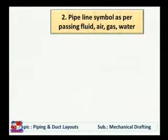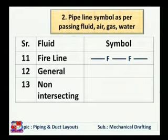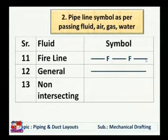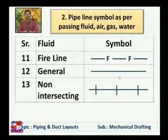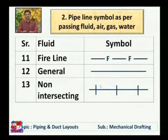To show other fluids like fire line, capital F is written intermittently — dash F dash F dash. In some cases, arrows are shown to indicate the direction of flow. A general symbol for fluid flow is just a plain line. When non-intersecting fluid is passing, small lines are drawn intermediately at a certain distance on a big line — one long line and some small lines — indicating non-intersecting fluid flow.